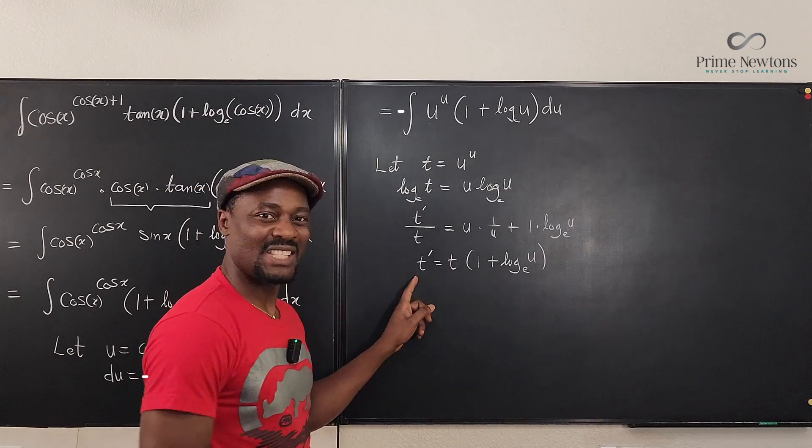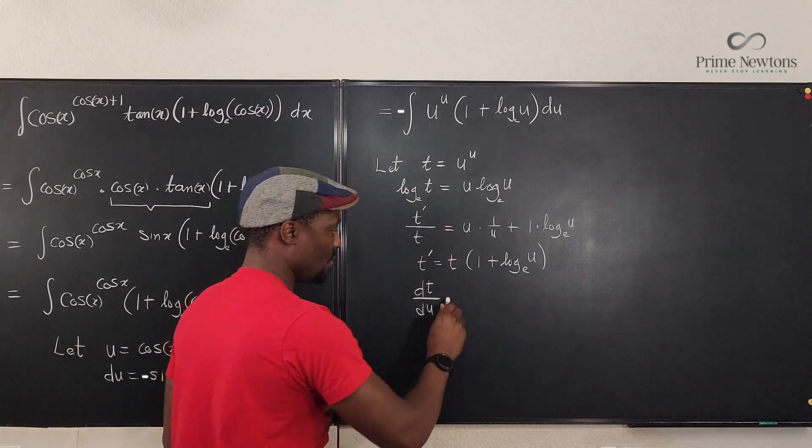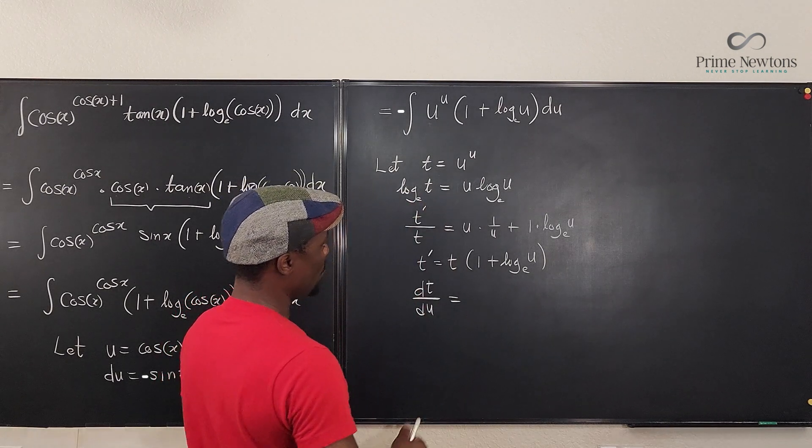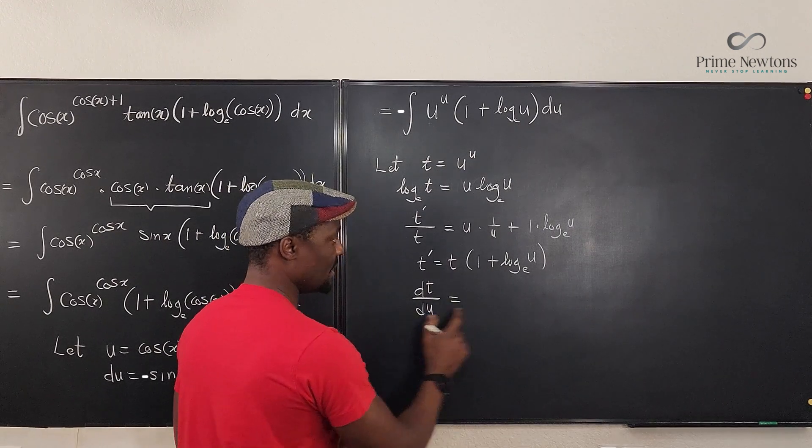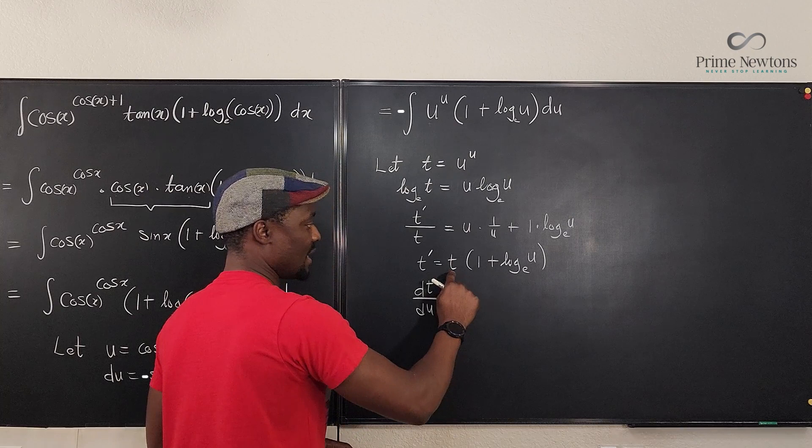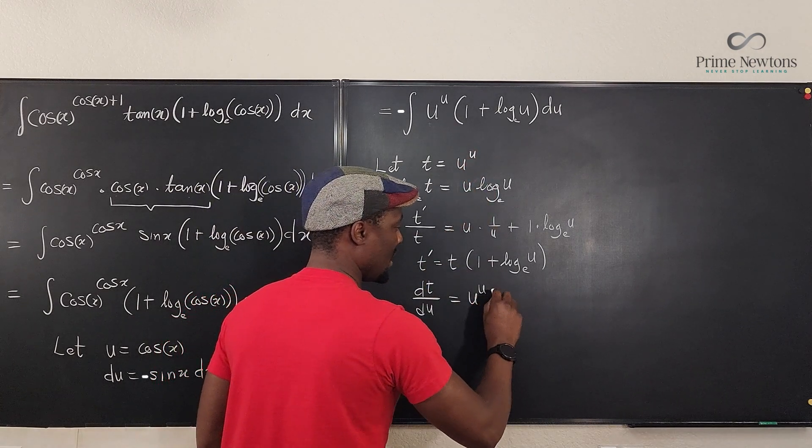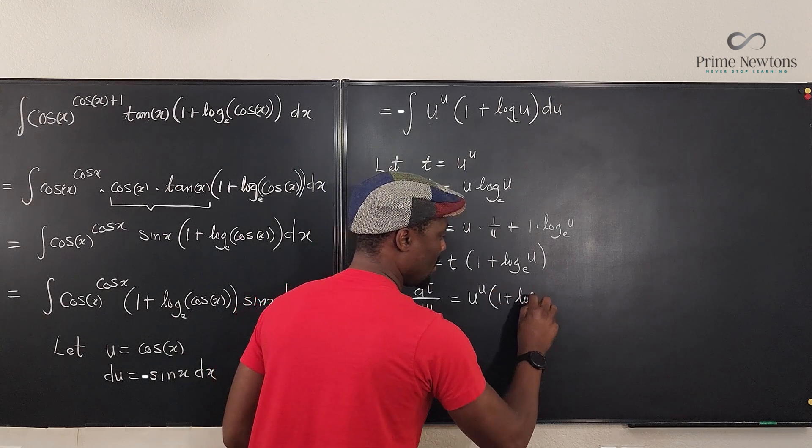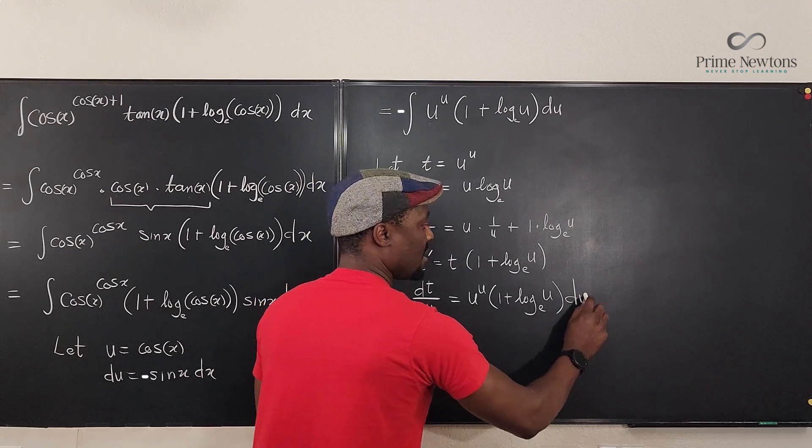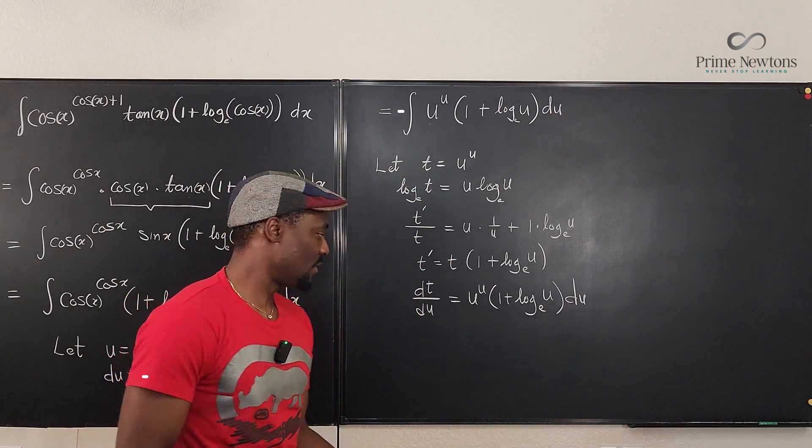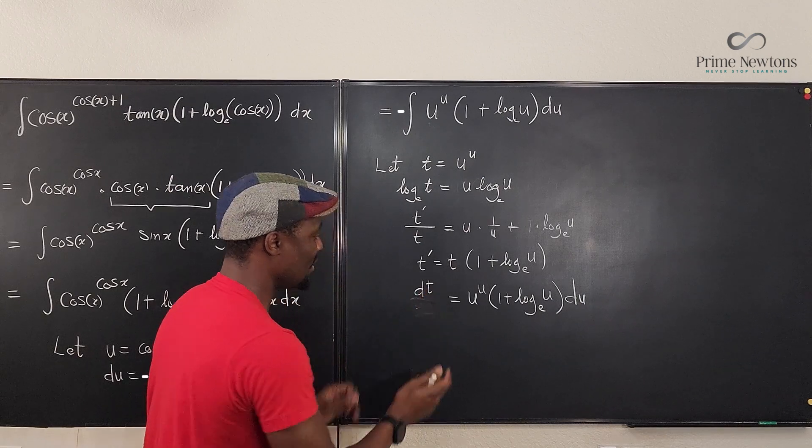And remember that t prime is what we call dt du in this case, which is equal to, what do we get? dt du will be equal to this. And I can move the du to this side so that this t, I can write it back as u prime. So this is going to be u to the u times 1 plus log to base e of u multiplied by du. So that's essentially what this would be if I remove my du from here. And all I have here is just dt.